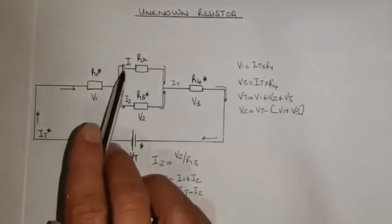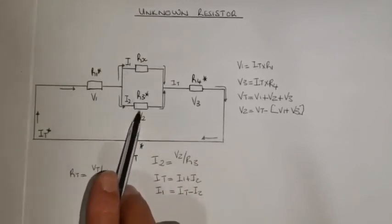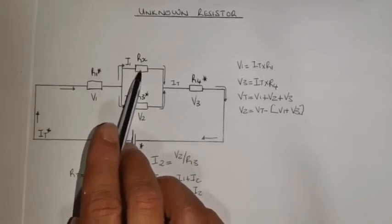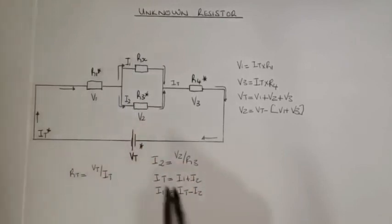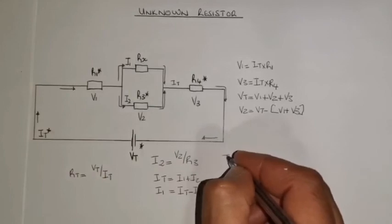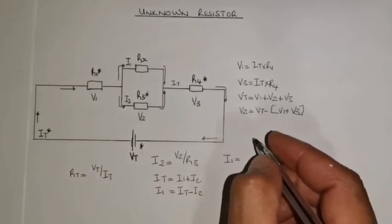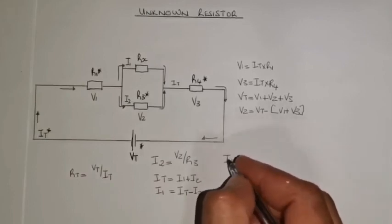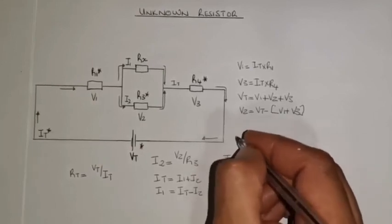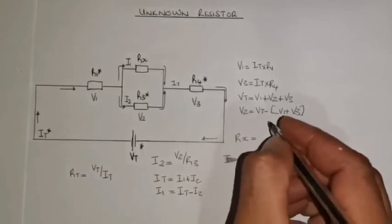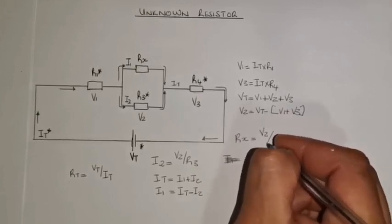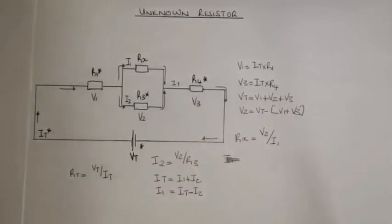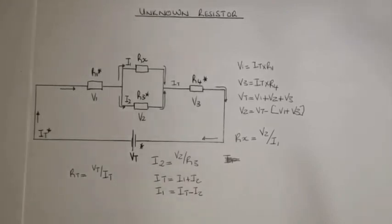Now, because I have I1 and I have the voltage drop V2 across that parallel section containing Rx, I can calculate the value of the unknown resistor. My final formula is: Rx equals V2 divided by I1. There I have the value of my unknown resistor in this specific circuit. Thanks for watching, and please subscribe to my channel for more of these interesting videos. Thank you very much.